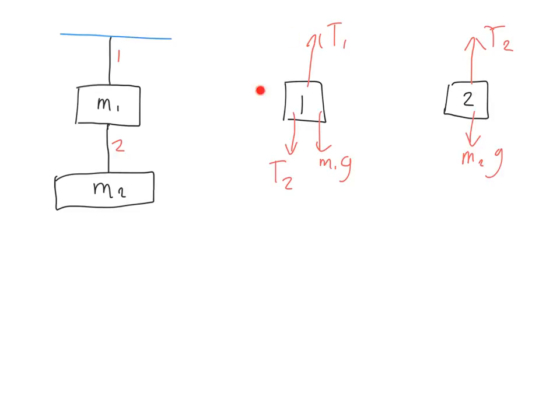So let's start with this block where it's as simple as can be. Let's do the sum of the forces on block 2 in the y direction. We're going to say that positive y is up. So, with this setup, tension 2 is in the positive direction. Weight is downward, so in the negative direction.